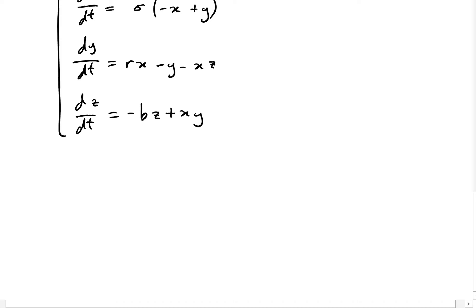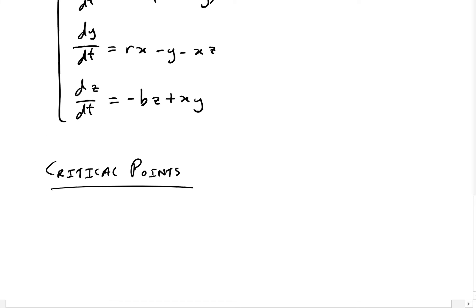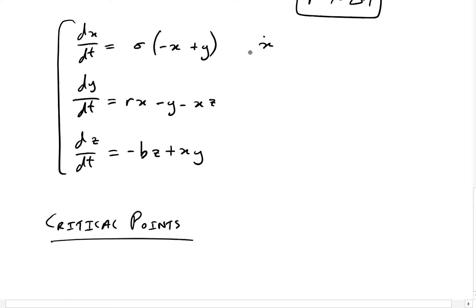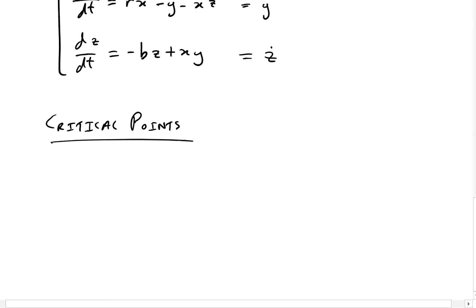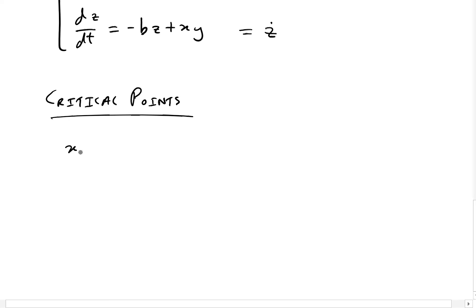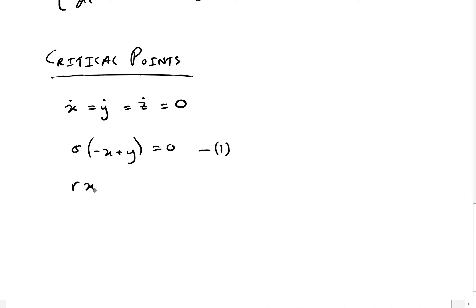This is a really nice example because it's an application in the real world — it literally describes how air moves. It also shows you how to solve a higher-order ODE beyond just the two-dimensional case. The first step is to find our critical points, or equilibrium points. We set each equation equal to zero: sigma(-x + y) = 0 (equation 1), rx - y - xz = 0 (equation 2), and -bz + xy = 0 (equation 3).